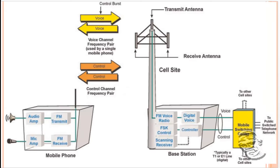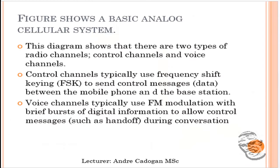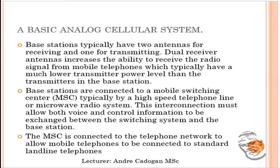This is a diagram you need to identify in exams for the 1G system. It shows two types of radio channels: control channels and voice channels. Control channels use frequency shift keying to send control messages, while voice channels use FM modulation with brief, blank, and burst digital information for events like handoff. The basic analog cellular base station typically has two antennas — one for receiving and one for transmission — increasing the ability to receive radio signals from mobile telephones that have lower transmission power than base station transmitters.